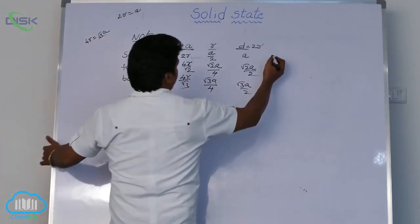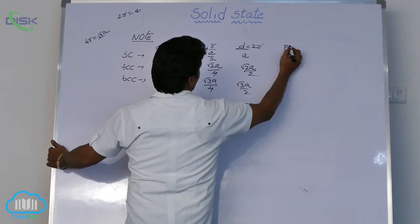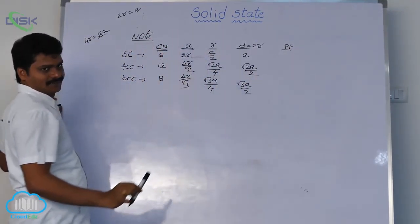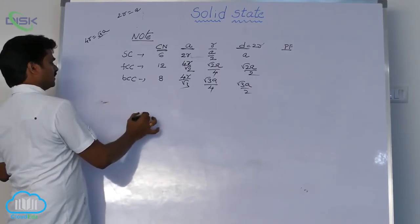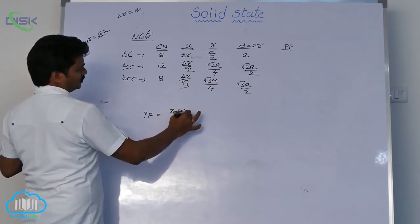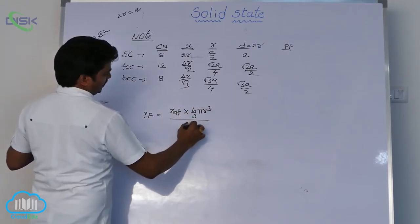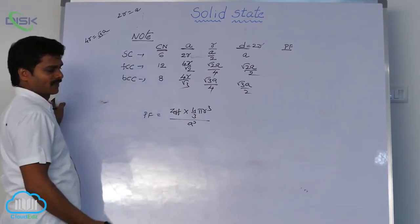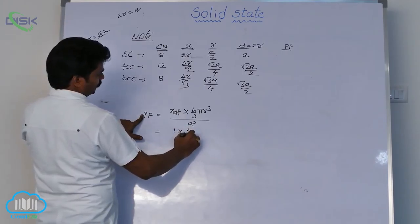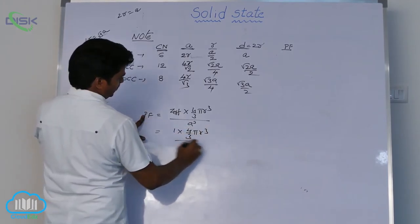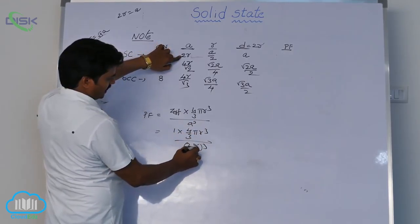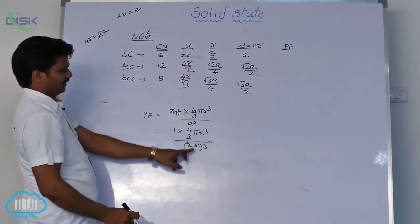Similarly, packing fraction — we already discussed the packing fraction for all three systems. The formula is: packing fraction equals Z effective into (4/3)πR³ divided by A³. For simple cubic, Z effective is 1, so it becomes 1 into (4/3)πR³ divided by (2R)³. R cubed cancels, and 2 cubed gives 8.